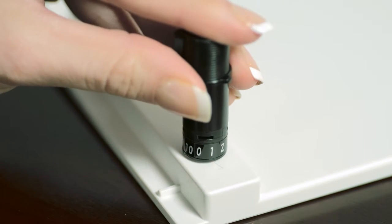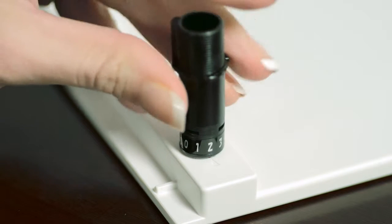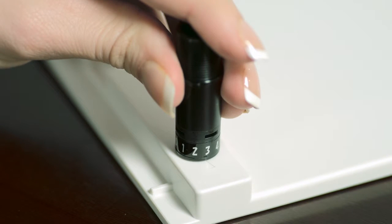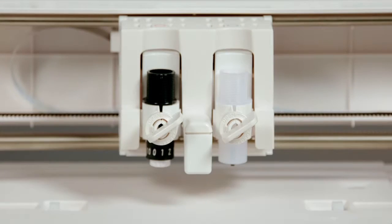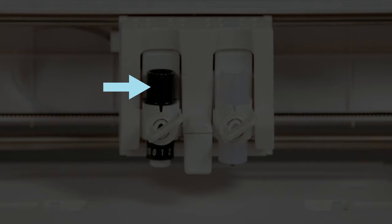Twist the blade until the blade depth number you want is lined up with the mark on the base. Place the blade tool into the Curio's left tool holder and place an embossing tool into the Curio's right tool holder.